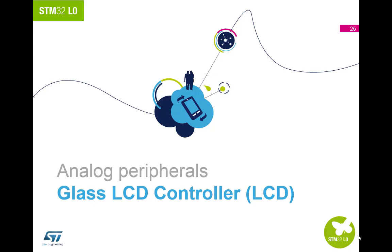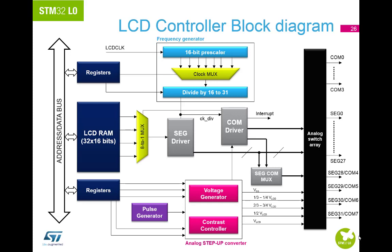Finally, let us look at the LCD controller. The LCD controller is a digital controller driver for monochrome passive liquid crystal displays, with up to 8 common terminals and up to 32 segment terminals to drive 128 (at 4x32) or 224 (at 8x28) LCD picture elements. Double buffered memory allows data in LCD RAM registers to be updated at any time by the application firmware without affecting the integrity of the data displayed. The LCD controller fully supports the low power modes and can be active in sleep, low power run, low power sleep, and stop modes, or fully disabled to reduce power consumption.